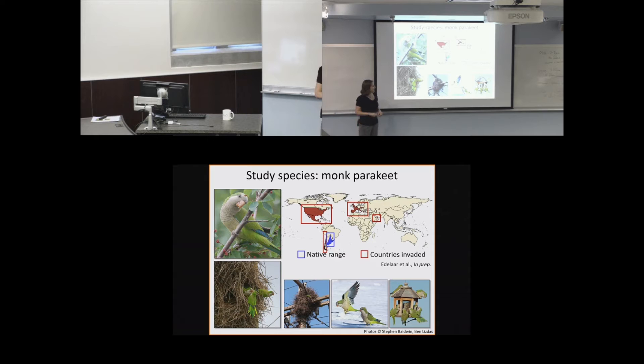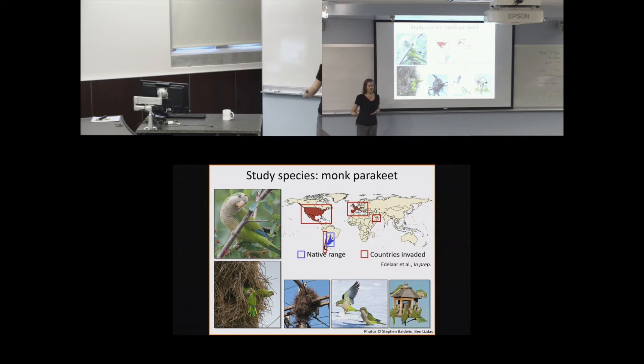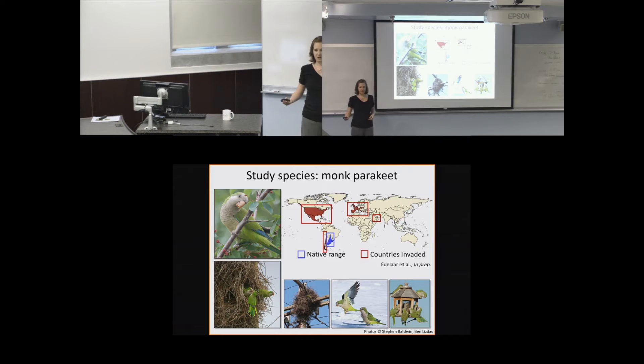The monk parakeet is also very successful as an invasive species and has established populations around North America and Europe especially. This success as an invasive species has been linked to a species' ability for adaptive flexibility, which has then been linked to the potential for complex cognition. So in addition to the potential for complex sociality, this species also shows the potential for complex cognition—making it a really neat species to focus on.